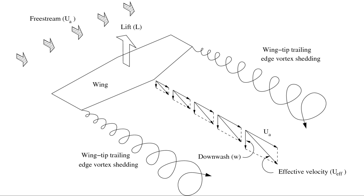This downwash provides a downward component to the freestream velocity. As a result, the effective velocity on the wing is canted downward in the vicinity of each airfoil section of the wing.